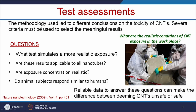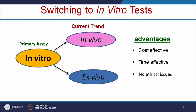The methodology used led to different conclusions on the toxicity of carbon nanotubes. Several criteria must be used to select meaningful results: which test simulates a more realistic exposure, whether results are applicable to all nanotubes, whether exposure concentrations are realistic, and whether animal subjects respond similarly to humans. Reliable data to answer these questions can make the difference between deeming carbon nanotubes unsafe or safe. In vitro methods use laboratory conditions with bacteria or cell lines to understand toxicity.